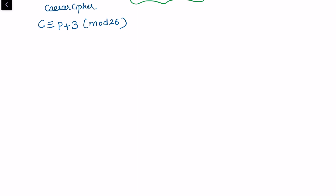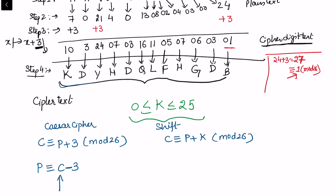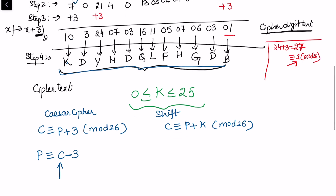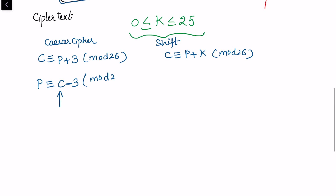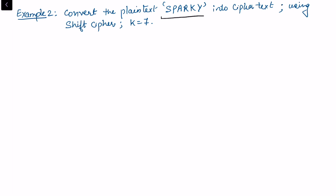The general cipher formula is: cipher text C ≡ (plain text P + k) mod 26. For the Caesar cipher specifically, C ≡ (P + 3) mod 26. For the deciphering process: P ≡ (C − k) mod 26. So if Bob receives the cipher text and knows k, he subtracts k and retrieves the plain text. In general, plain text P ≡ (C − k) mod 26.